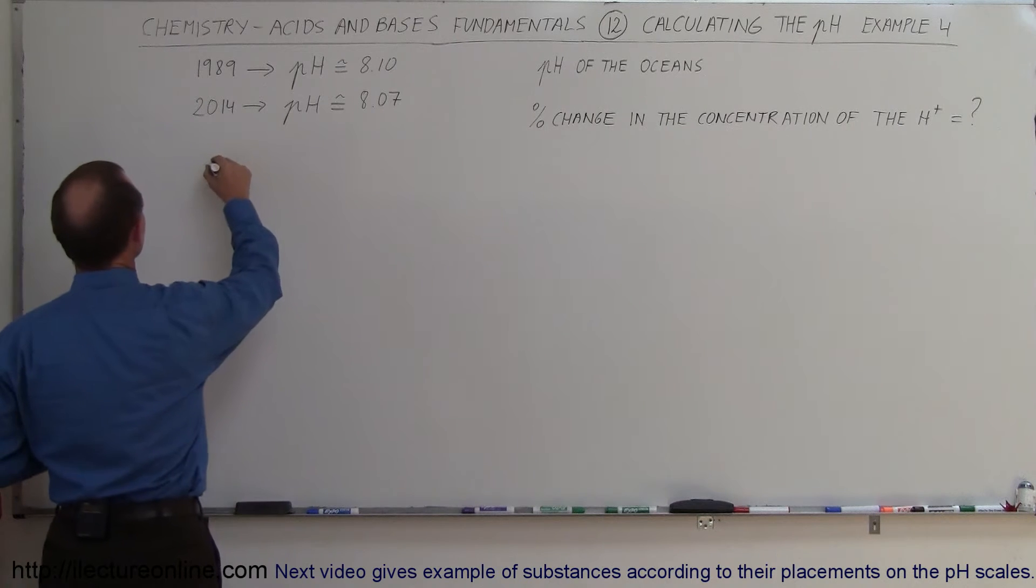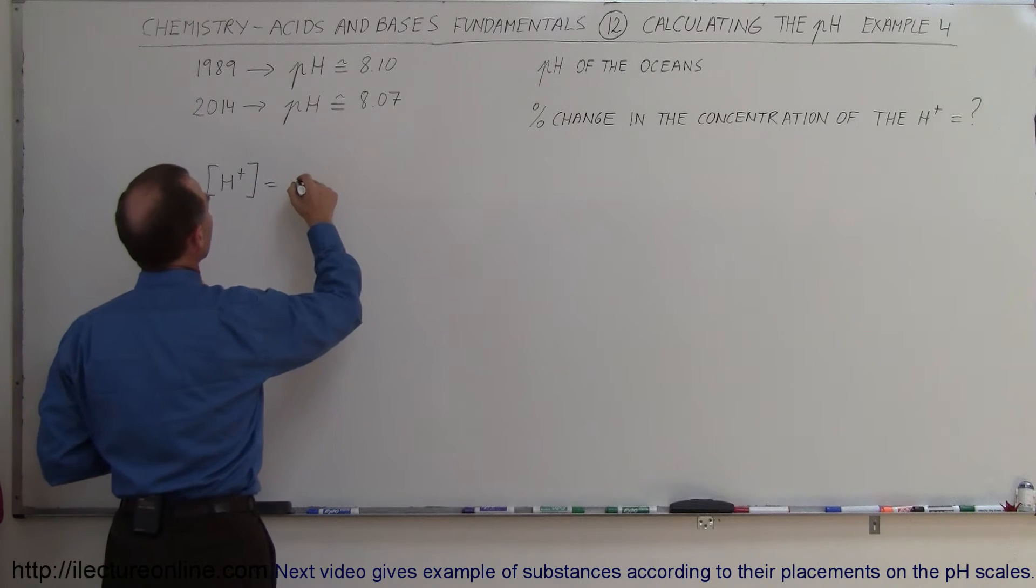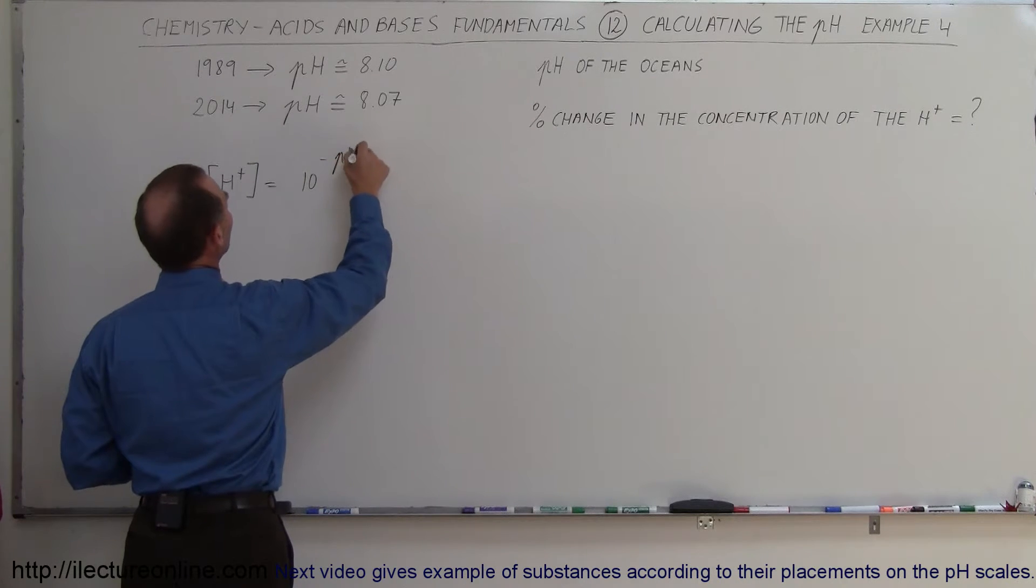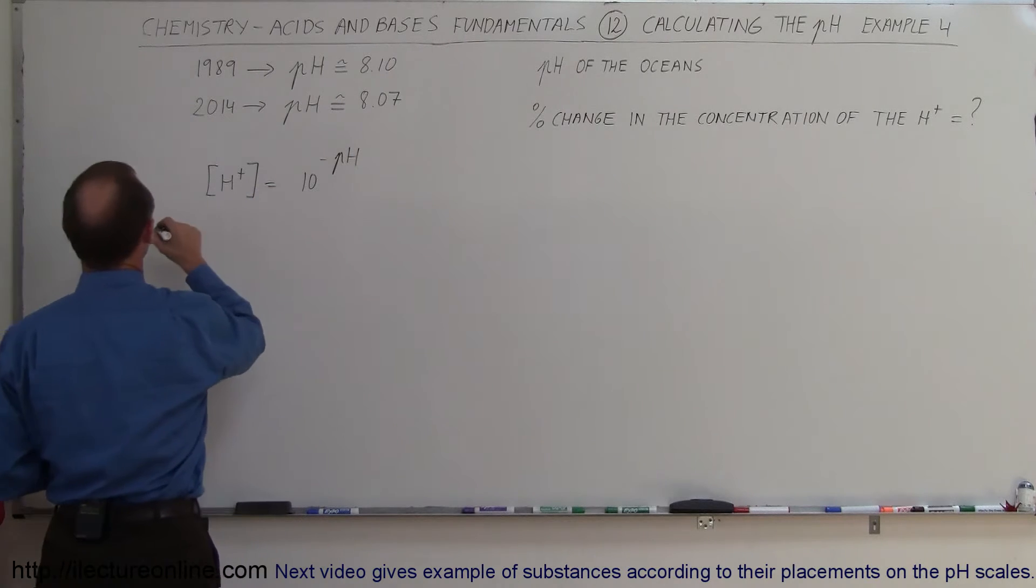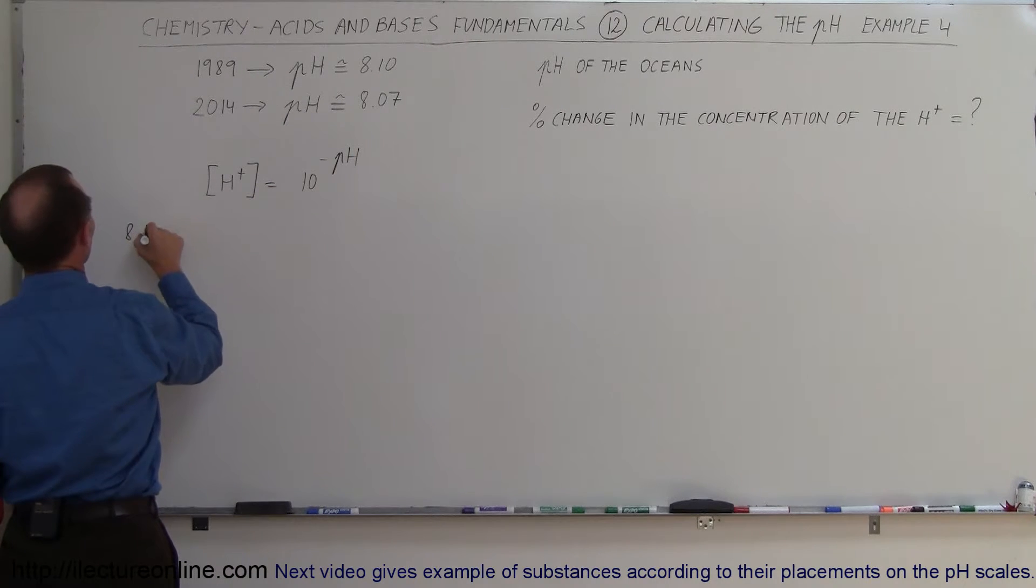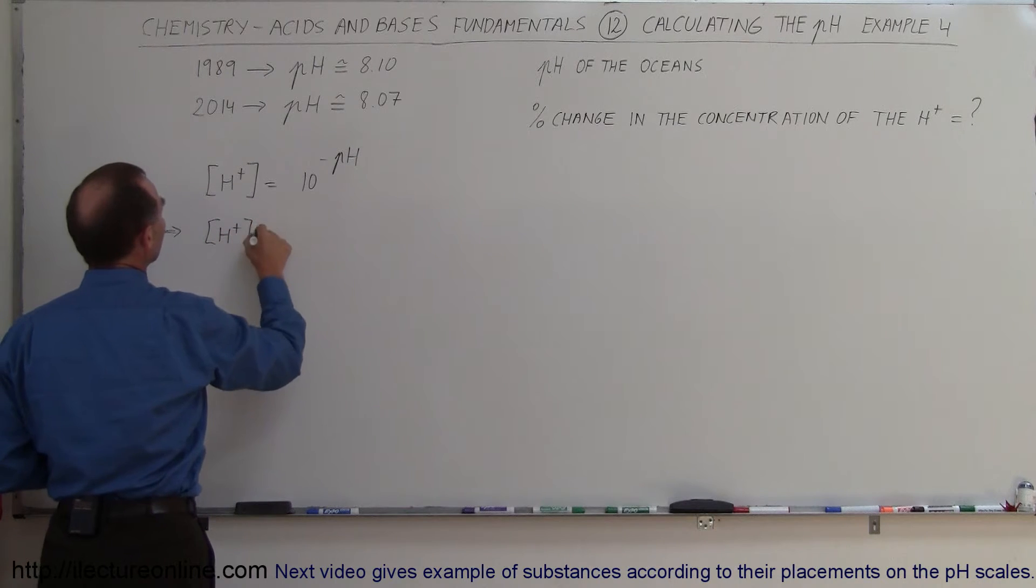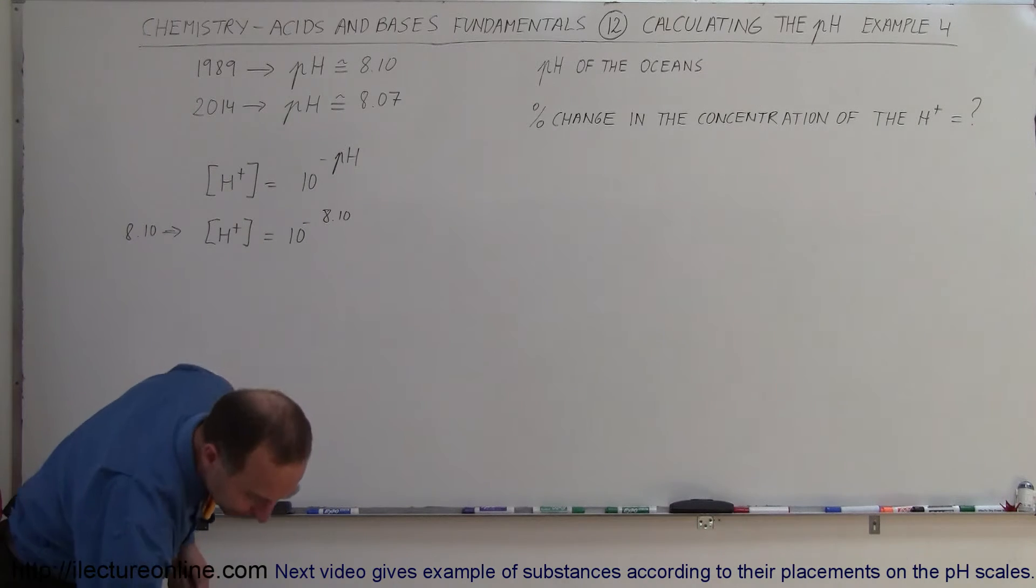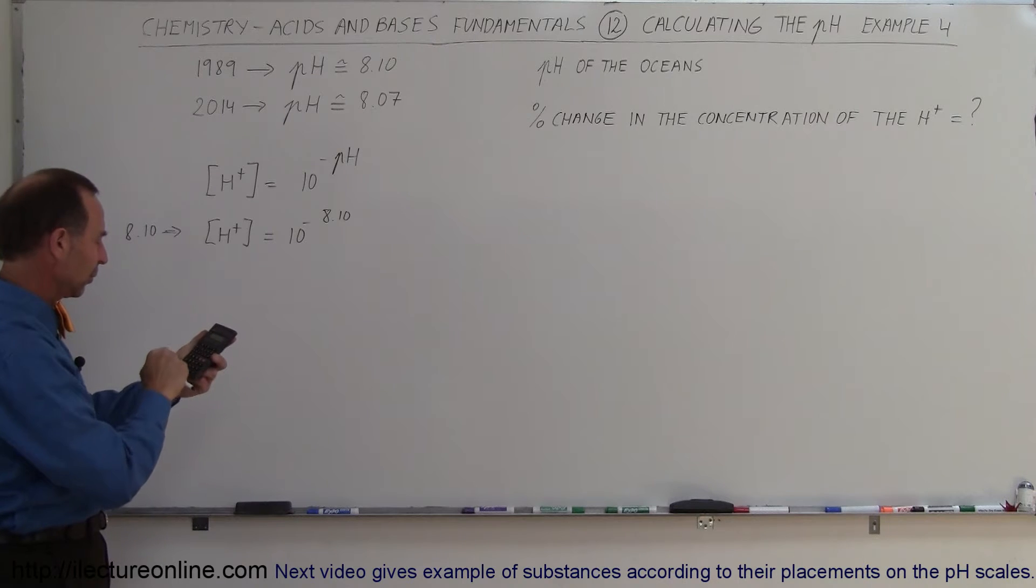We can say that the concentration of the hydrogen ion is equal to 10 raised to the minus pH. In this case, for the value of 8.10, the concentration of the hydrogen ion is equal to 10 to the minus 8.10. Now we need a calculator for that. Let's see what that is equal to.